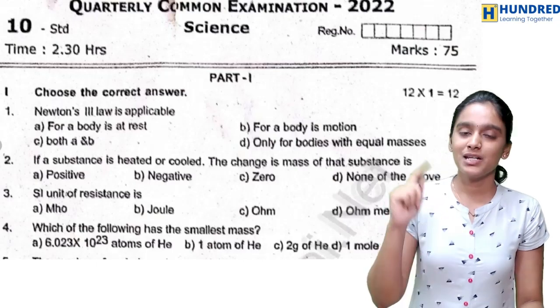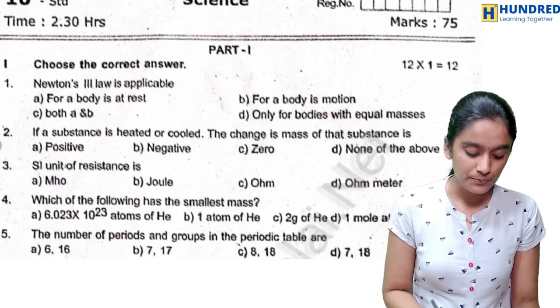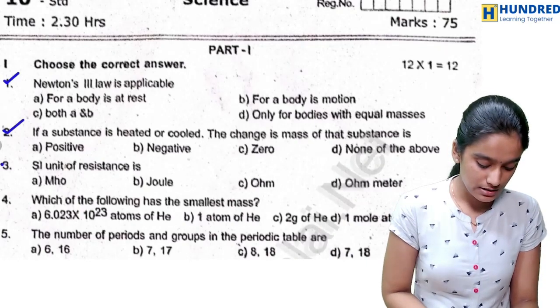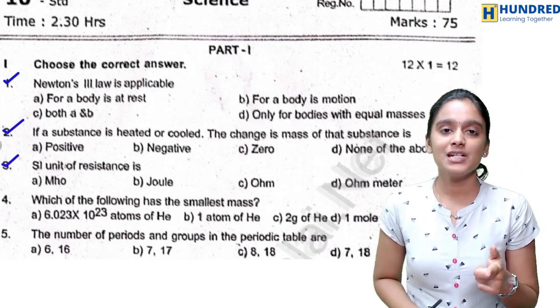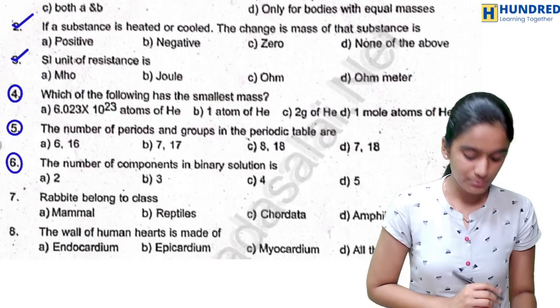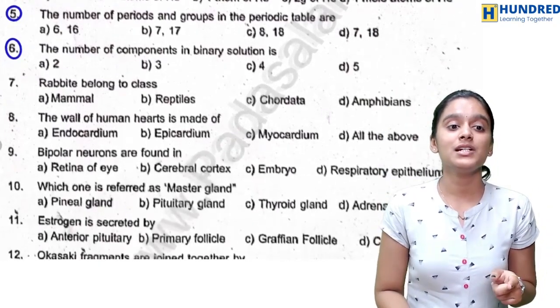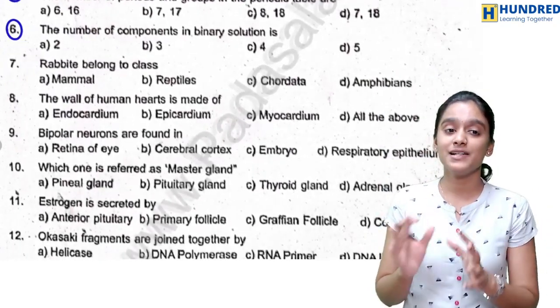So in Part 1, there are 12 one marks. And in the 12 one marks, first three questions are from physics. In the three questions of physics, the next three questions are from chemistry, and next six questions are going to come from your biology.